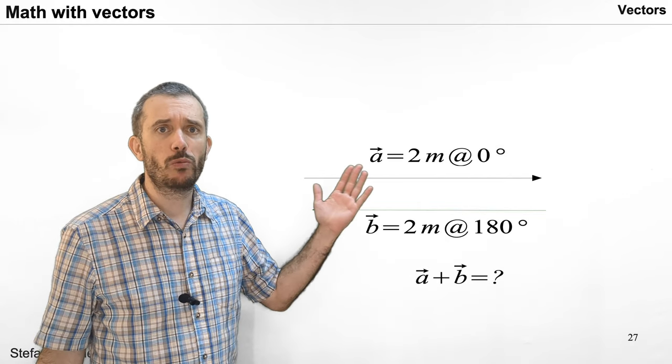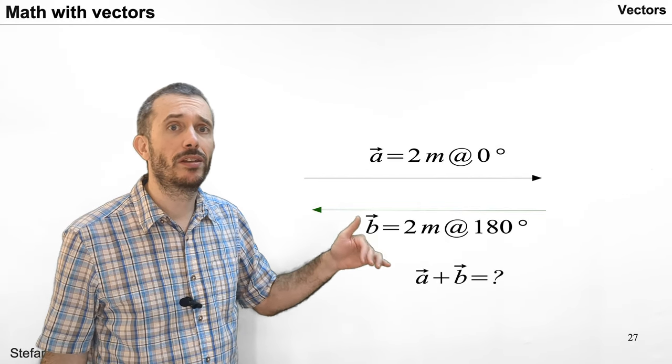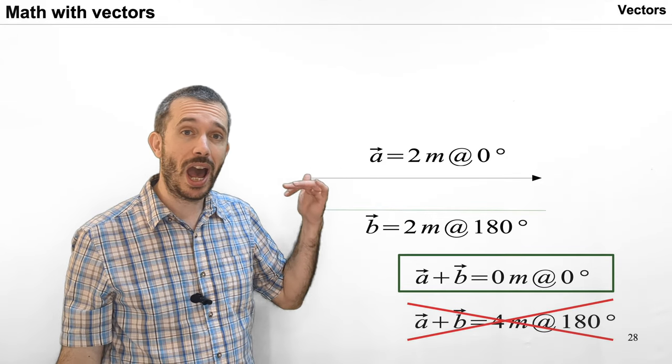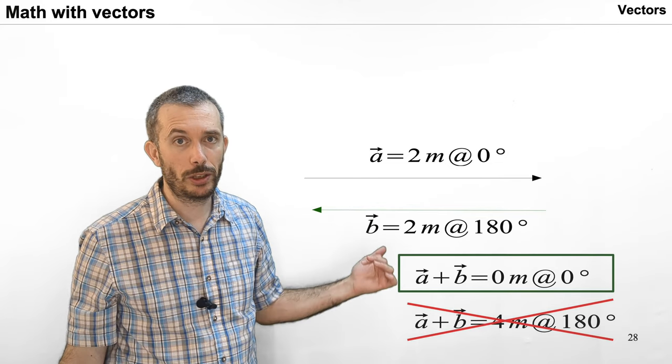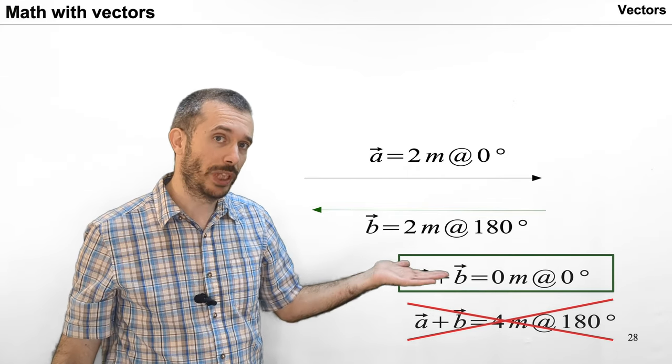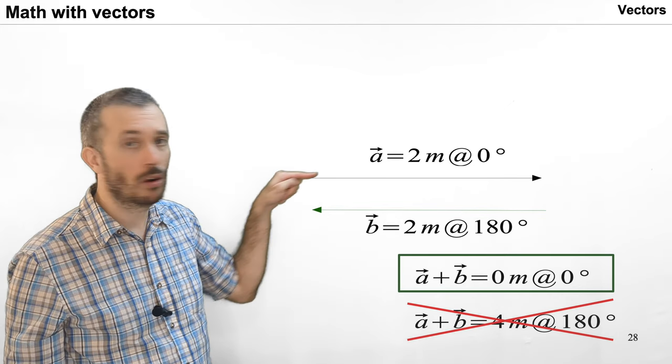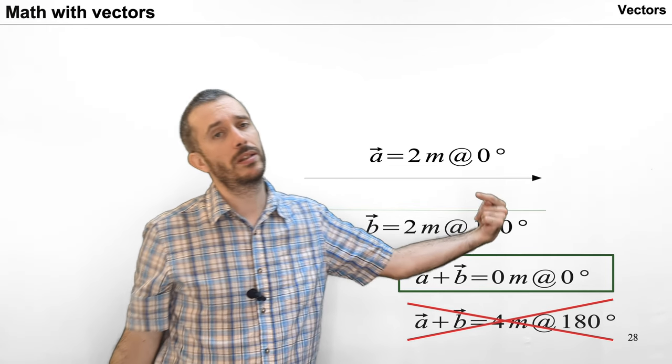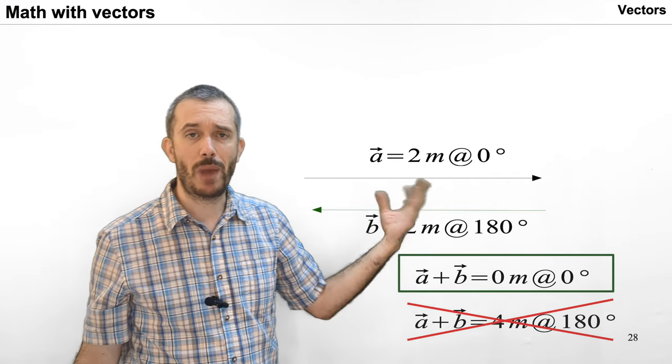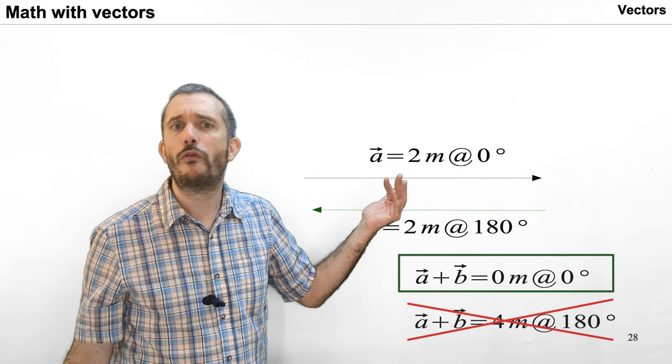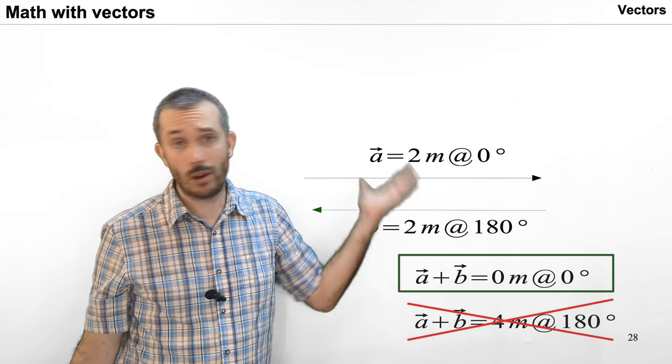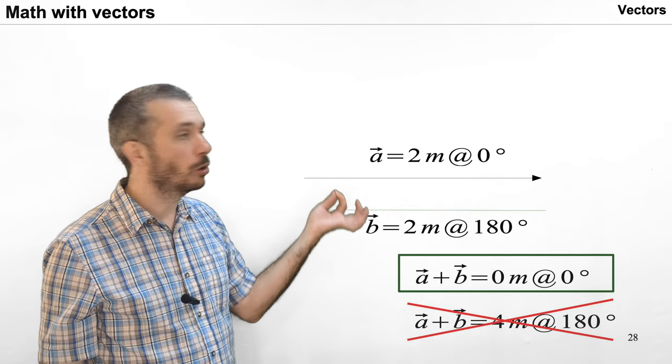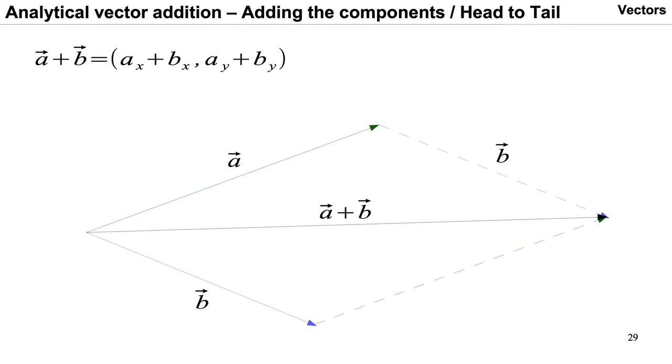When we want to do math with vectors, the rules are a bit different than the rules for math with scalars. For example, when you add vectors, you cannot just add the magnitudes and the angles. Simple demonstration why this doesn't work. Let's take a vector of 2 meters to the right, and then we add a vector of 2 meters to the left. If we add magnitude and direction, we would get 4 meters at some angle. But obviously, if you go 2 meters to the right and 2 meters to the left, you have a total of 0.